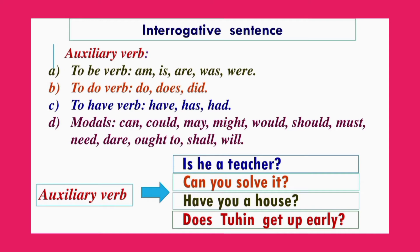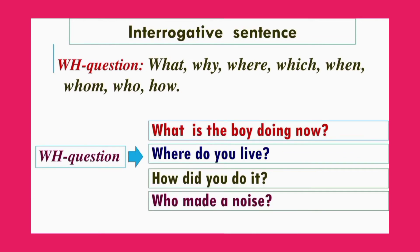In an interrogative sentence, we use: auxiliary verb, then subject, then extension. Such as: 'Is he a teacher?' 'Can you solve it?' 'Have you a house?' 'Does he get up early?' For WH-questions: 'What is the boy doing now?' 'Why do you leave?' 'How did you do it?' 'Who made a noise?'